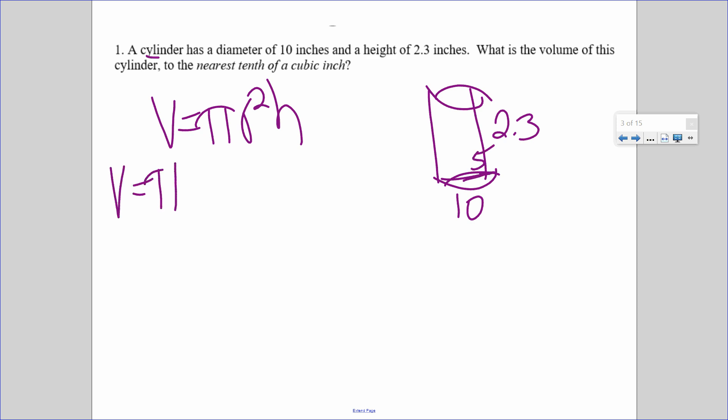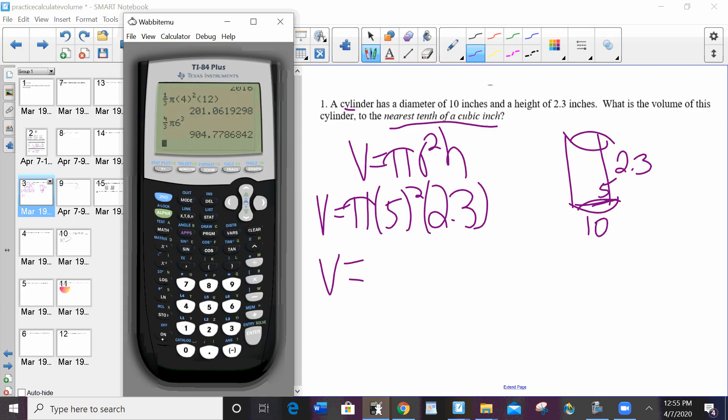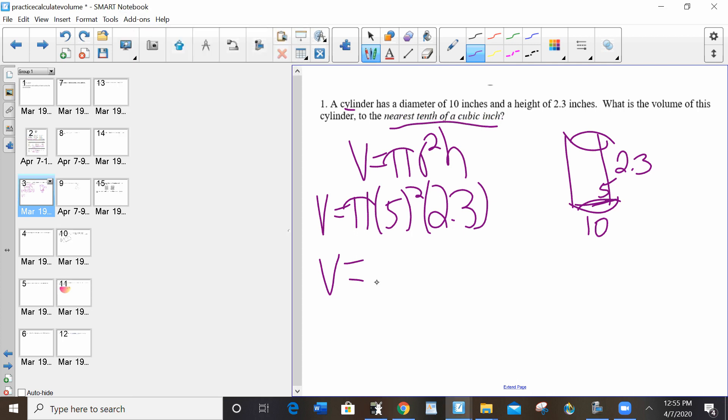V equals pi, 5 squared, 2.3. Sometimes we type pi into the calculator. Sometimes we don't. Because it says nearest tenth, we do type pi in. If it said in terms of pi, or there were pi's in the answers for multiple choice, then I wouldn't. So let's pull up my calculator. Pi, 5 squared, 2.3 to the nearest tenth, 180.6 cubic inches.